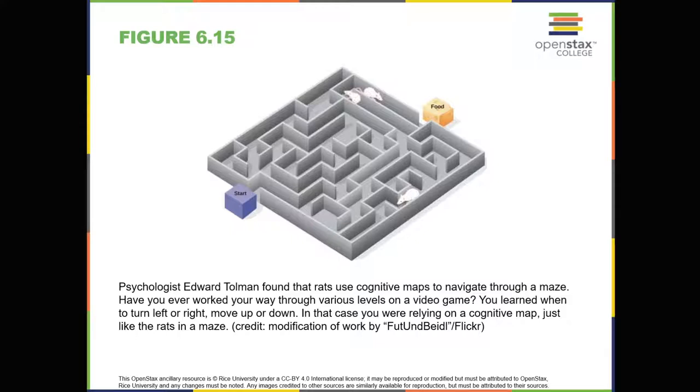Cognition and latent learning. Although strict behaviorists such as Skinner and Watson refused to believe that cognition, such as thoughts and expectations, plays a role in learning, another behaviorist, Edward C. Tolman, had a different opinion. Tolman's experiments with rats demonstrated that organisms can learn even if they don't receive immediate reinforcement. This finding was in conflict with the prevailing idea at the time that reinforcement must be immediate in order for learning to occur, thus suggesting a cognitive aspect to learning. In the experiments, Tolman placed hungry rats in a maze with no reward for finding their way through it. He also studied a comparison group that was rewarded with food at the end of the maze. As the unreinforced rats explored the maze, they developed a cognitive map, or a mental picture of the layout of the maze, as shown in Figure 6.15.